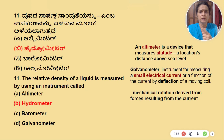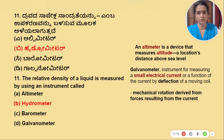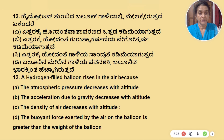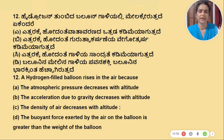A galvanometer is used for measuring current. It can measure heavy current or big current — there is mechanical force and deflection. A hydrogen-filled balloon rises in the air. Options: atmospheric pressure decreases with altitude, acceleration due to gravity decreases with altitude, density of air decreases with altitude, or the buoyant force exerted by the air on the balloon is greater than the weight of the balloon.